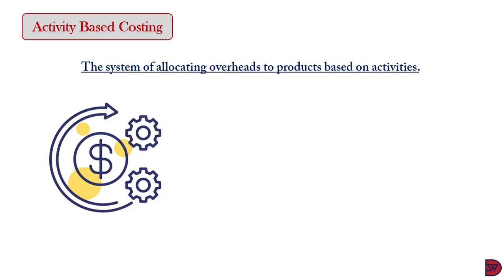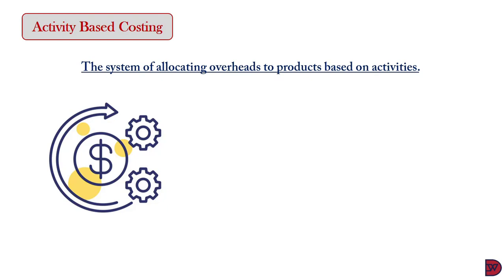The absorption rate could be labor hours or the production unit. With activity-based costing, also known as ABC, the production activities are firstly identified — activities could be rent, utilities, or canteen. Secondly, a cost pool is established, which is the accumulation of all costs related to the activity.